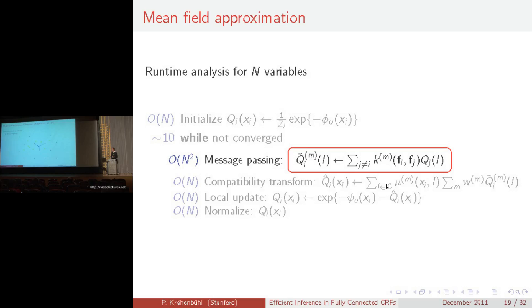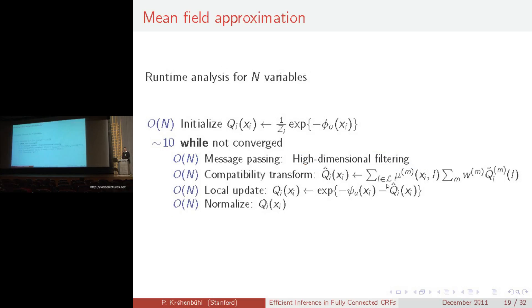This Permutohedral lattice allows us to take our message passing step in the mean field approximation and replace it with a simple high dimensional filter, leading to an algorithm that is linear in the number of variables and independent of the number of pairwise connections in the CRF.